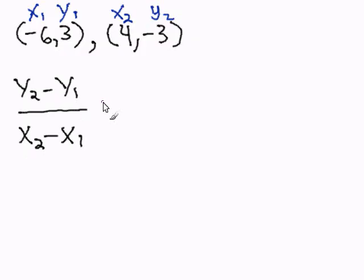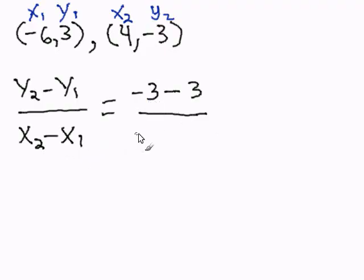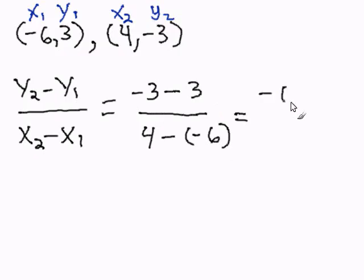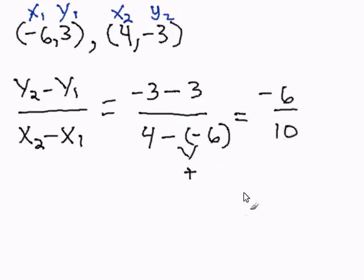Once I have that labeled, I'll substitute into the formula: y2 minus y1 is negative three minus three, over x2 minus x1 which is four minus negative six. Negative three minus three is negative six. And four minus negative six is four plus six — because minus a negative becomes a plus — and four plus six is ten. Negative six over ten reduces by two to give us negative three over five. Bringing the negative down, our slope is negative three over five, and this completes our problem.